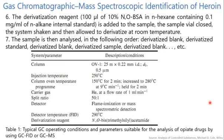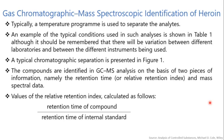The detector used is generally a flame ionization detector or mass spectrometric detector. Detector temperature is about 290°C. The derivatizing reagent is N,O-bis-trimethylsilyl acetamide (BSA). Typically a temperature program is used to separate the analytes, as shown in Table 1.